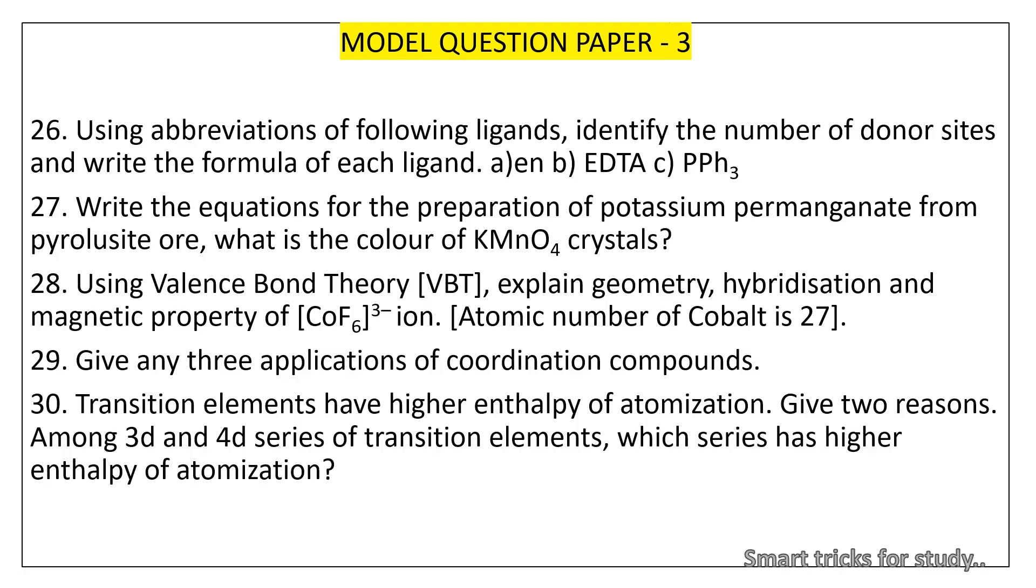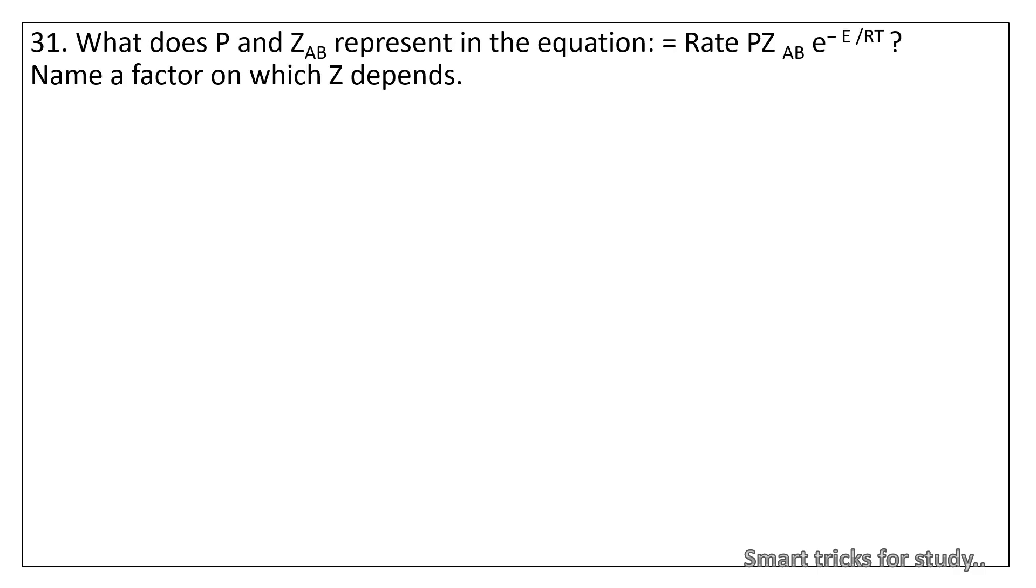30. Transition elements have higher enthalpy of atomization. Give two reasons. Among 3D and 4D series of transition elements, which series has higher enthalpy of atomization?